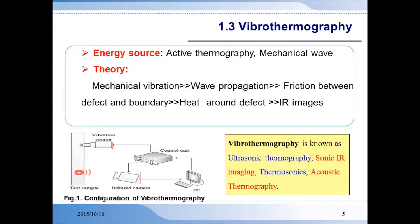The mechanism in vibrothermography is that a mechanical wave propagates across the surface. If there is a defect on the surface of the object — for example, a crack — such a mechanical wave can cause friction. This friction will cause heat to be generated around the location of the crack, which can be detected using IR imaging.